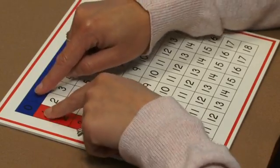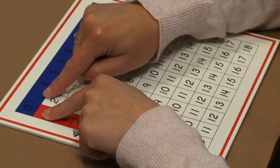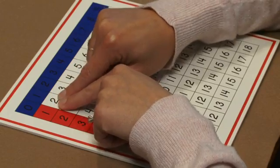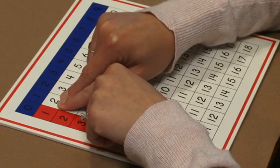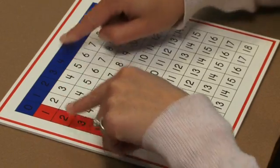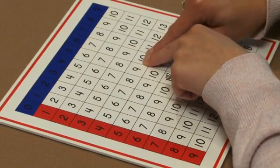If we had 1 plus 1, we would drop our finger down and over to where it meets, and we would know that 1 plus 1 equals 2. 6 plus 4, we have 10.